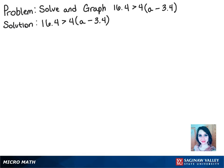So the first thing we want to do is distribute the 4 to both terms in the parentheses. So then we'll get 16.4 is greater than 4a minus 13.6.